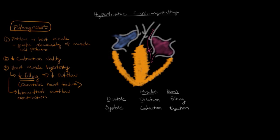When the ventricle space is smaller due to less filling, the degree of obstruction increases and you get intermittent blockage. When an individual with hypertrophic cardiomyopathy has a normal heart rate, they're able to fill properly and blood can get out because that space is a bit expanded. It's the combination of these two problems — diastolic heart failure and intermittent outflow obstruction — that result in the signs and symptoms of hypertrophic cardiomyopathy.